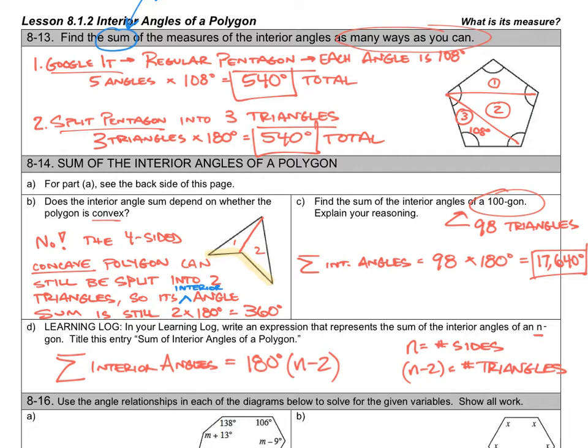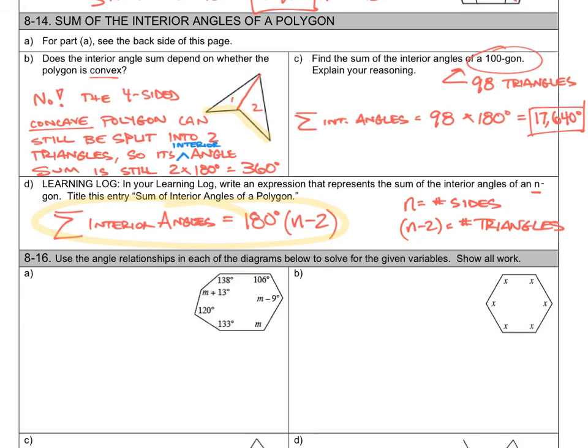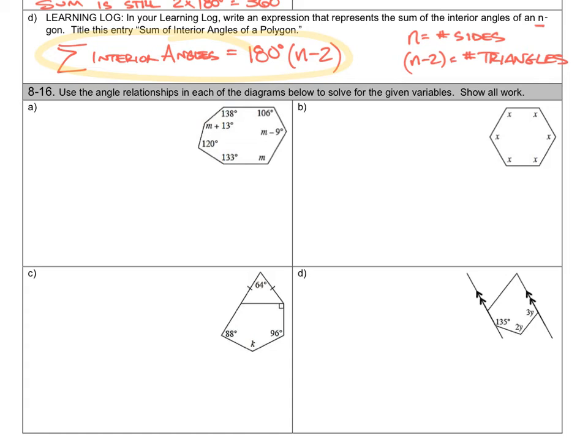All right, so let's move down to question 16. Now we're going to do some problems. We're going to see if we can use this new tool for the sum of the interior angles of a polygon and solve some geometric problems. 8-16. Use the angle relationships in each of the diagrams below to solve for the given variables. Show all of your work. Well, the way I like to start these problems is first identify what type of polygon we have. So let's go ahead and count sides here. I got one, two, three, four, five, six. That's a seven-sided polygon. So the sum of the interior angles is going to be 180 times 7 minus 2, and that's 900 degrees.